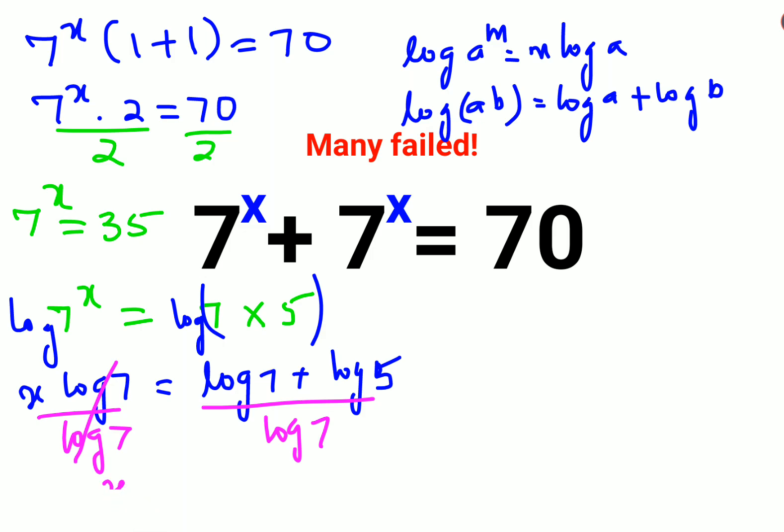So what we can do is we will split both sides. So we can say x equals to log 7 upon log 7 plus log 5 upon log 7.